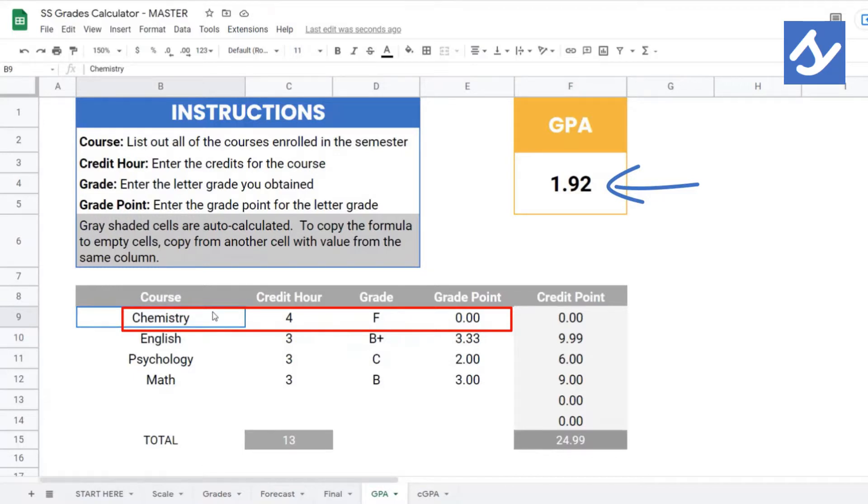So, what can you do? Drop the course if it's possible. Look at what happens to your GPA once you drop Chemistry. It went up from 1.92 to 2.78 and you're safe.